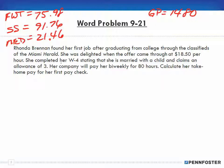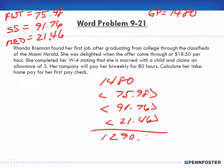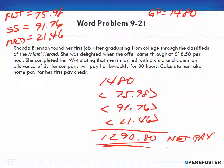The problem says to calculate her take-home pay for her first paycheck. Her gross pay is $1,480, and we subtract $75.98 federal withholding, $91.76 Social Security, and $21.46 Medicare. That gives us a net pay of $1,290.80 — that's her take-home pay and the answer to this question. If you didn't understand that, pause and watch the video again. If you don't understand the theory, go back and watch the chapter 9 payroll theory videos. And if you still don't understand, feel free to contact an instructor. I'll see you in the next video.